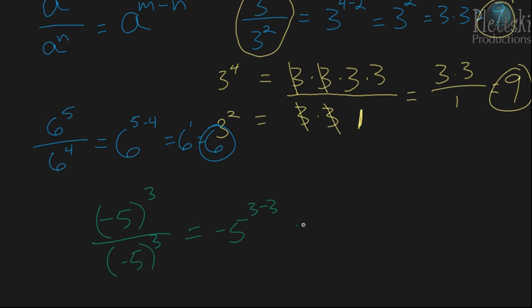And what that gives you is negative 5 to the 0 power. And if you'll remember, the 0 exponent property says that anything to the 0 power is just going to equal 1. So in this case, we have negative 5 to the 0 power equals 1.